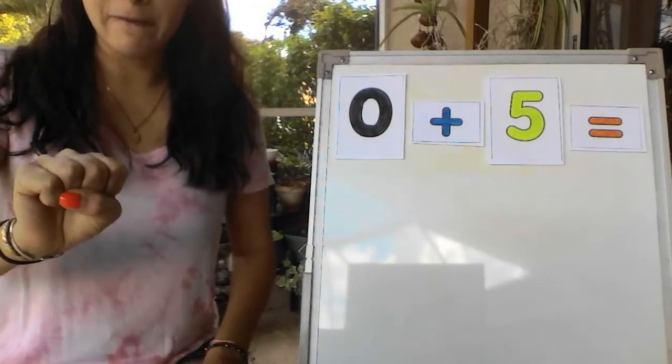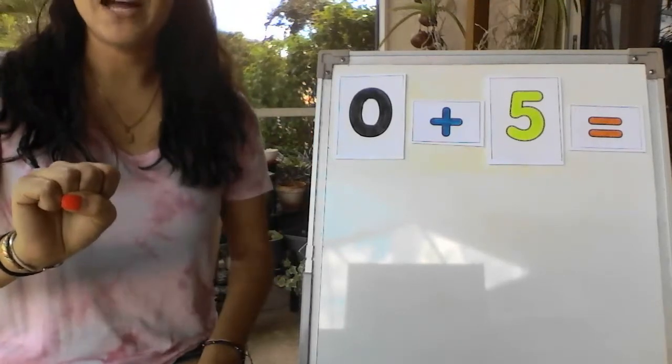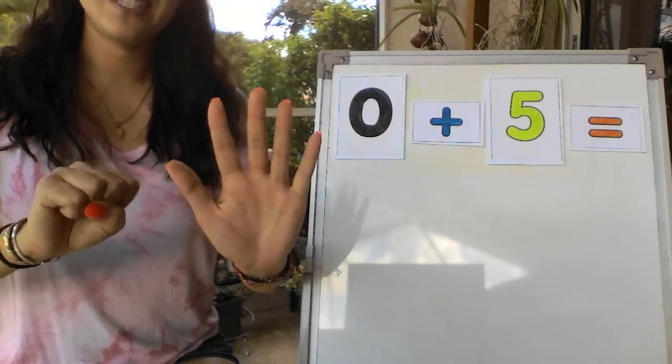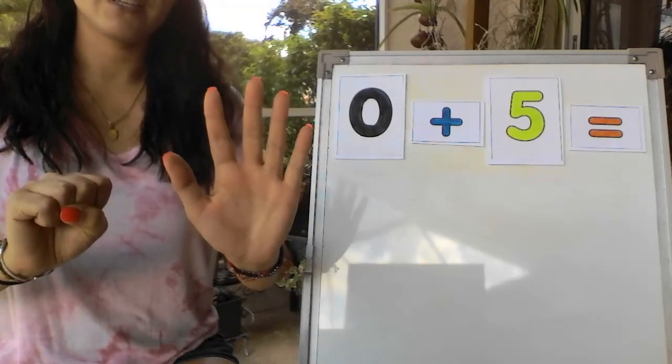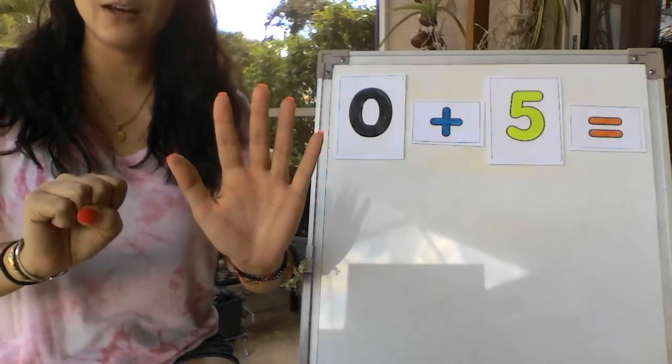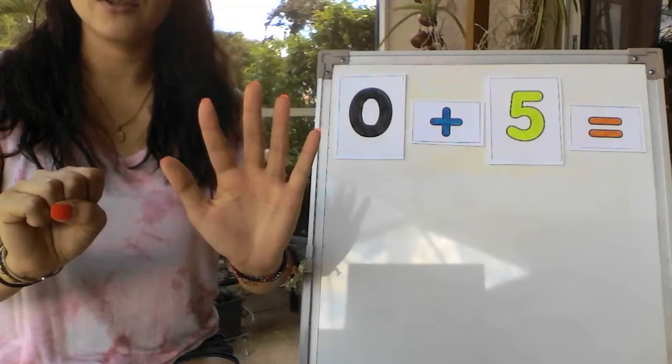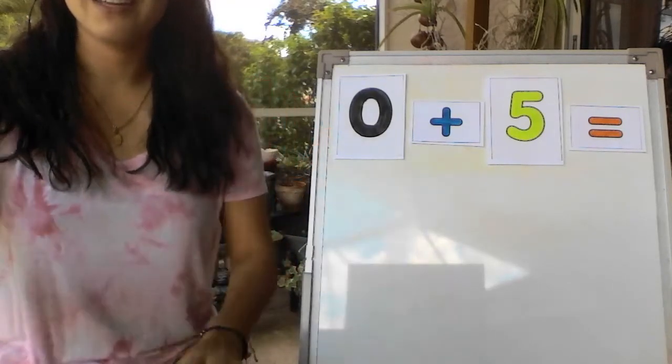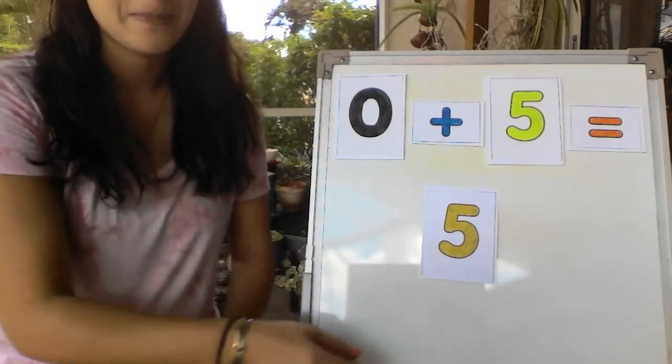I can't put up zero fingers. So I just keep all of my fingers down. Now I'm going to put up five fingers. So if I have zero fingers on this side and I have five fingers on this side, when I count, I don't count any numbers here. I just count 1, 2, 3, 4, 5. So 0 plus 5 equals 5.